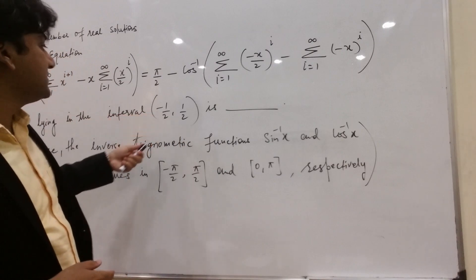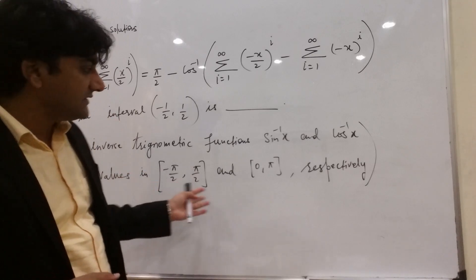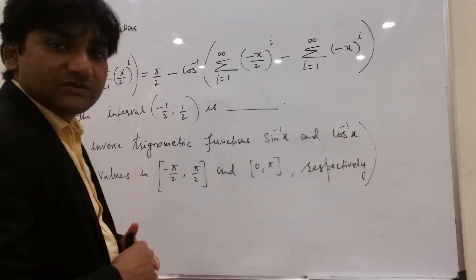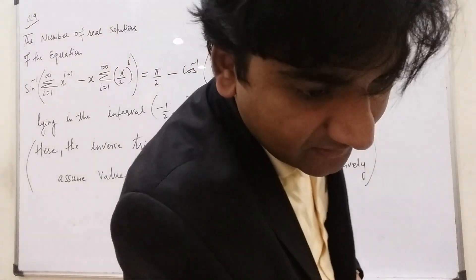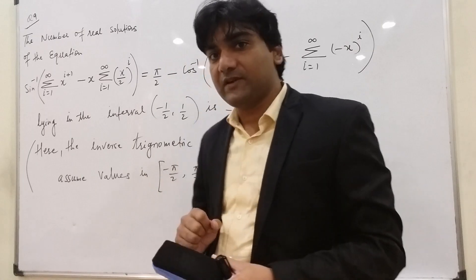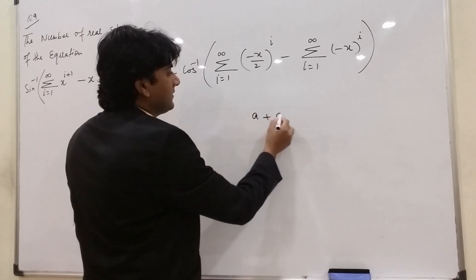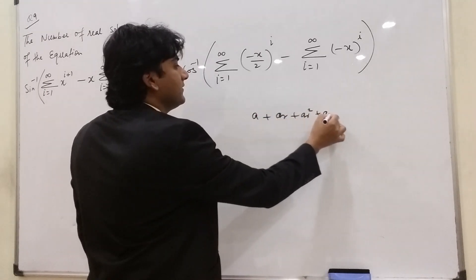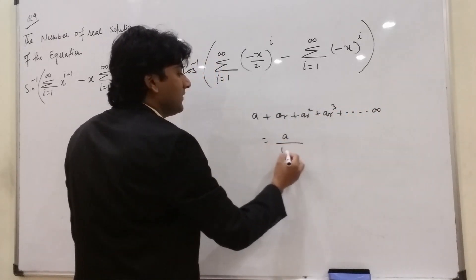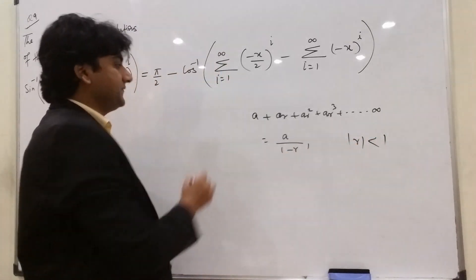The inverse trigonometric functions sin⁻¹ and cos⁻¹ have domains given: sin⁻¹ x has range −π/2 to π/2, and cos⁻¹ x has range 0 to π. Before starting, I want to review the GP sum to infinity: a + ar + ar² + ar³ + ... equals a/(1 − r), where |r| < 1.